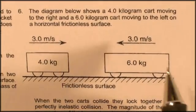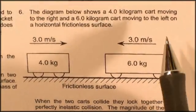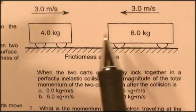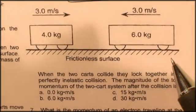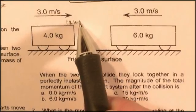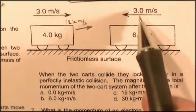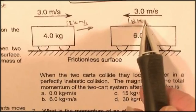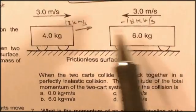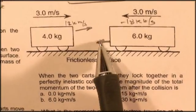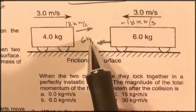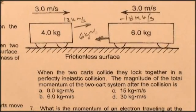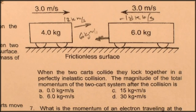Question six. The diagram shows a four kilogram cart moving to the right and a six kilogram cart moving to the left on a horizontal frictionless surface. Well, let's do something before we get started. Let's do the momentum of the system. Three times four is going to be 12 kilogram meters per second, this way. And three times six is going to be 18 kilogram meters per second, that way. Call it negative. And so an overall momentum of the system will be in this direction of six kilogram meters per second. When the two carts collide, they lock together with a perfectly inelastic collision. The magnitude of the total momentum of the two-cart system after the collision is, well, the same as it was at the beginning before the collision.